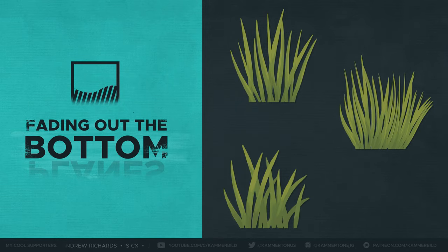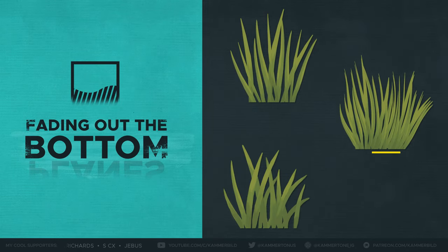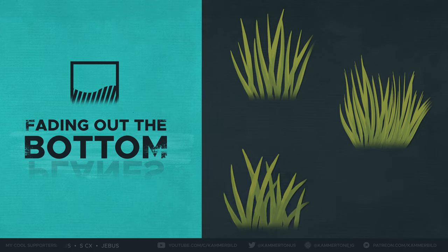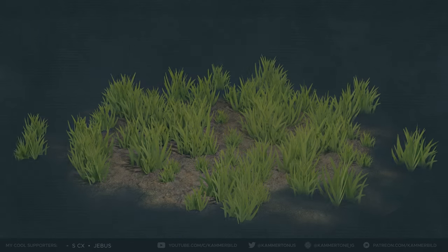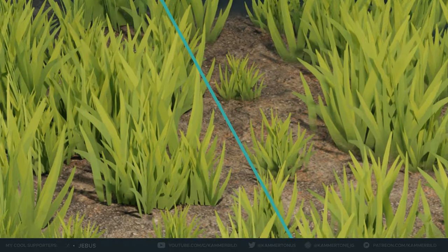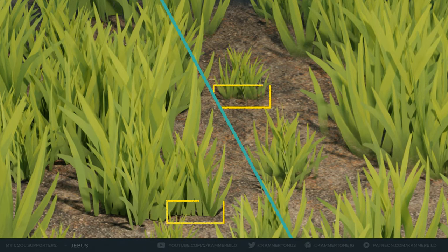Bonus idea: fading out the bottom. Since we are trying to hide the straight line where the billboards intersect with the ground, it's maybe also a fun idea to blend out the texture at the bottom a little bit, if your program allows for that.